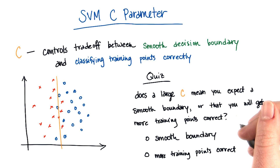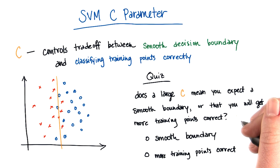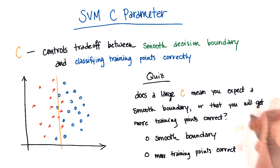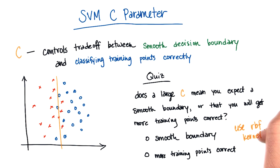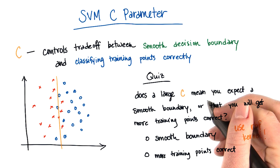And instead of running those with Naive Bayes, you can just run them with an SVM and play around with different values of C, and use that to answer the question. Just a pro tip: use the RBF kernel, because this is where you'll actually see a big difference based on the value of C that you use.